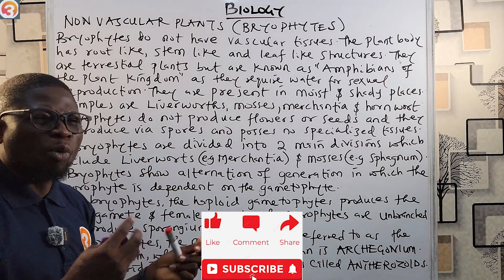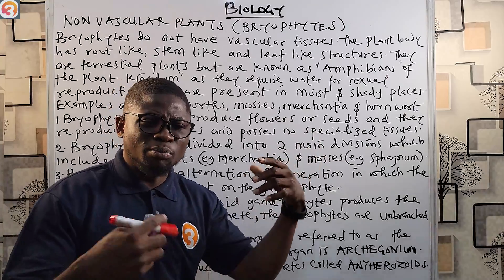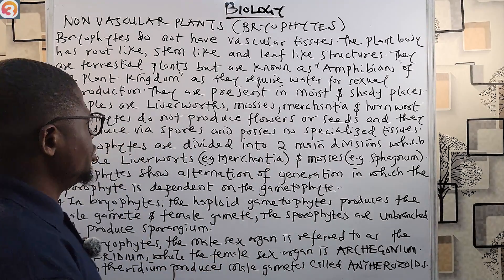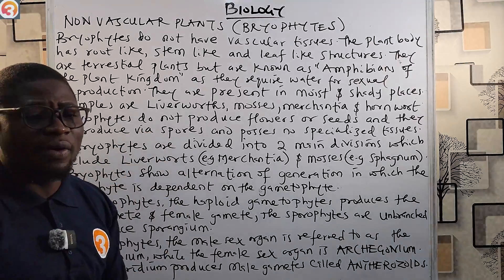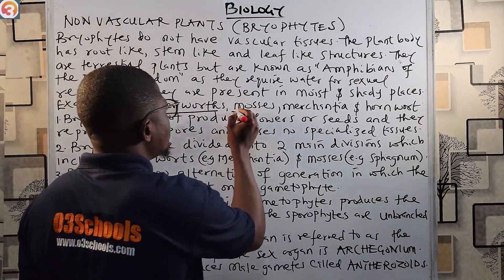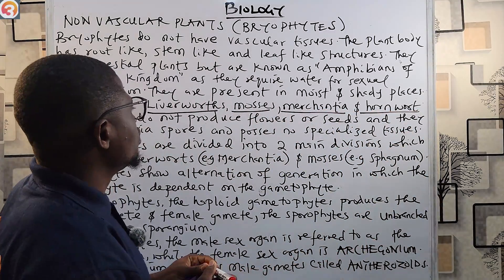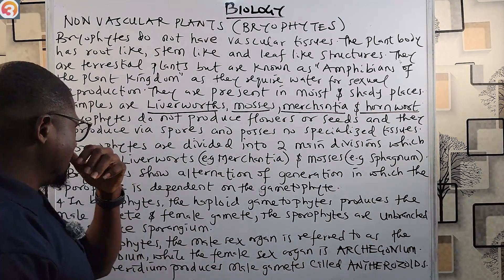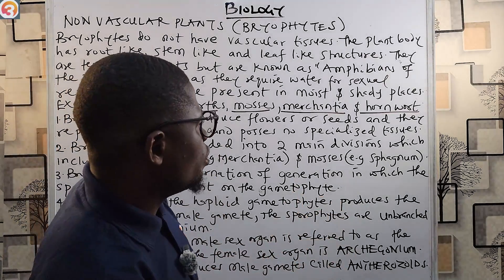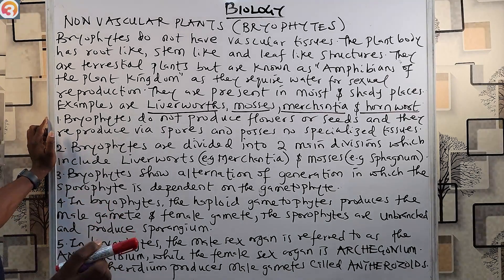Bryophytes are present in moist and shady places, because they need water for reproduction. Examples of bryophytes include liverworts, mosses, marchantia, and hornworts.